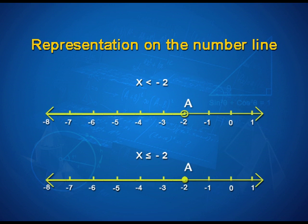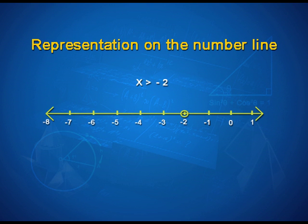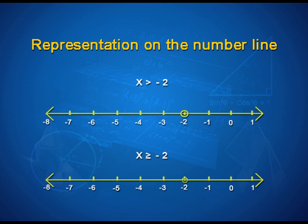In a similar manner, the inequality x > -2 is represented with a hollow circle at point A and the region marked on the right-hand side of A on the number line. For x ≥ -2, we place a colored (filled) circle at point A and mark the region on the right-hand side of point A. This completes the representation of inequalities on the number line.